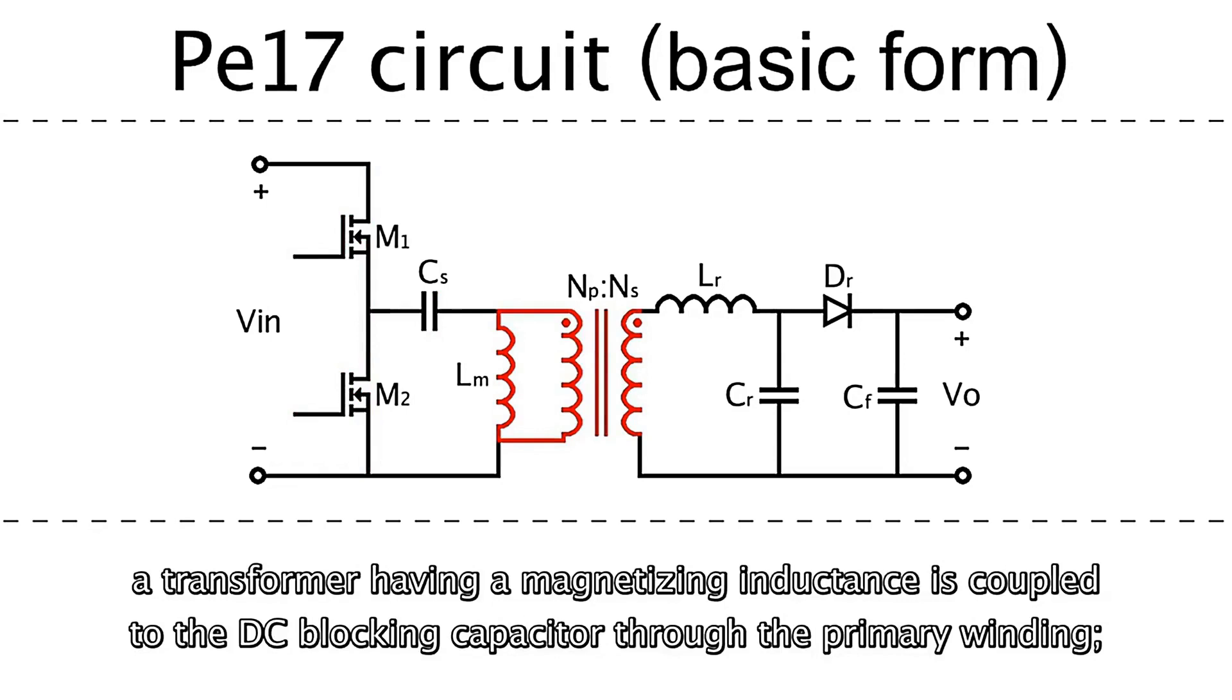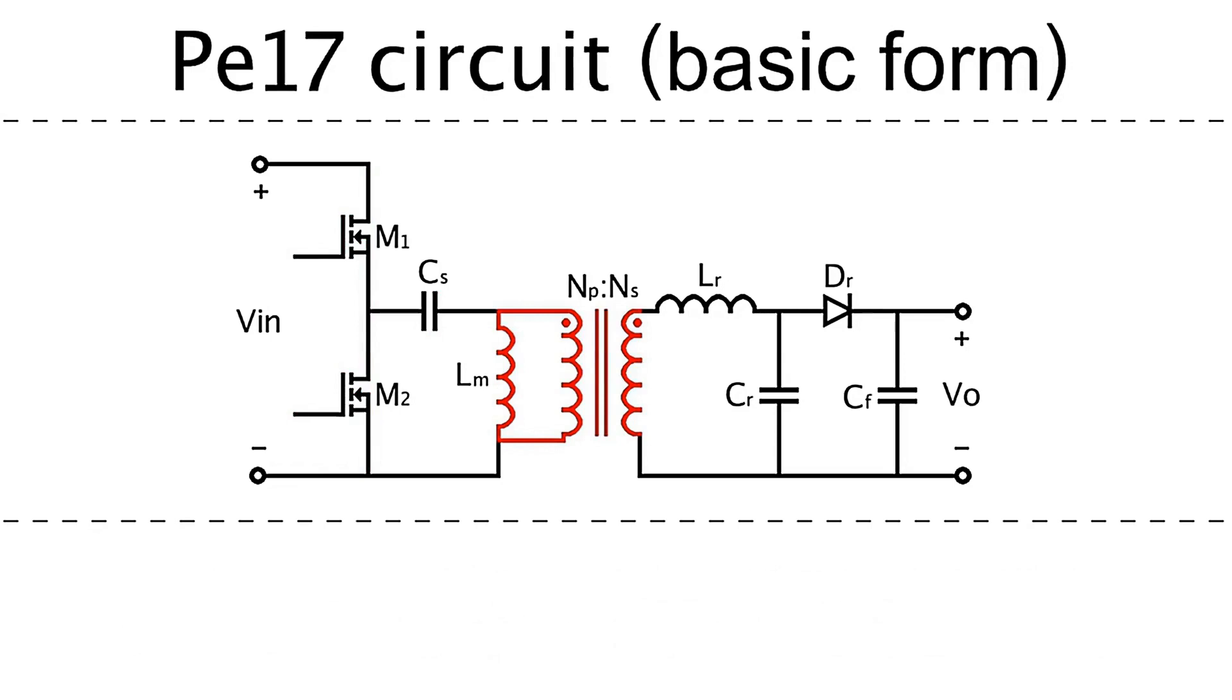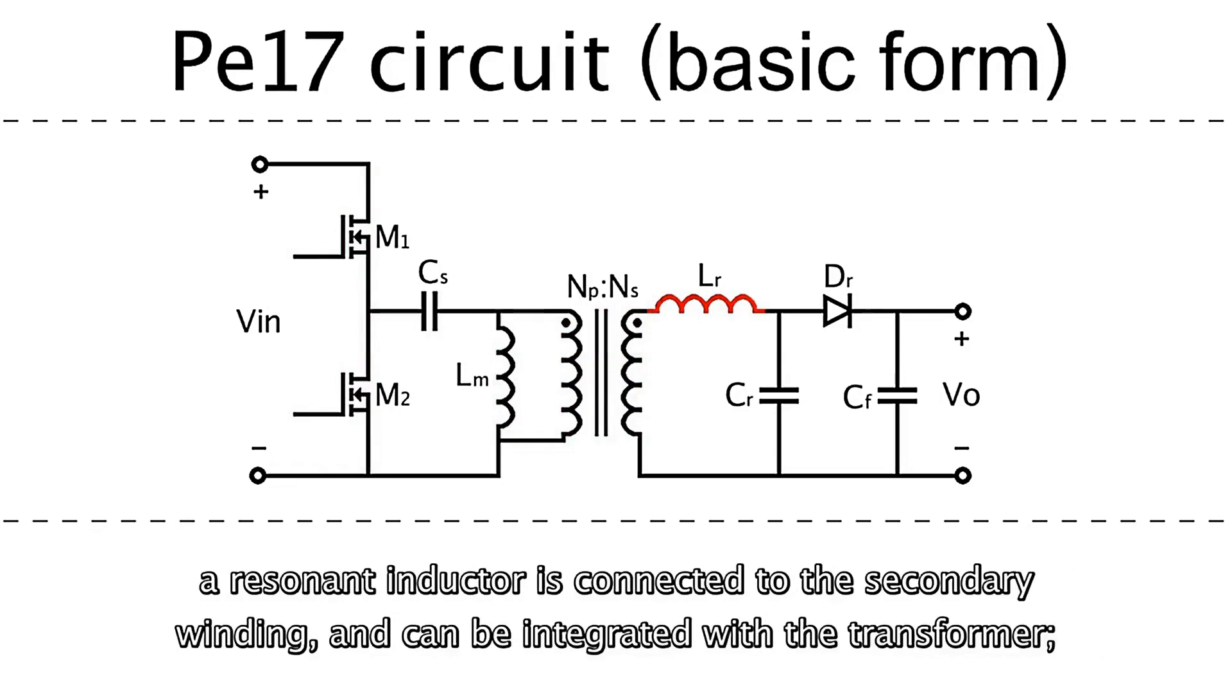A transformer having a magnetizing inductance is coupled to the DC-blocking capacitor through the primary winding. A resonant inductor is connected to the secondary winding and can be integrated with the transformer.